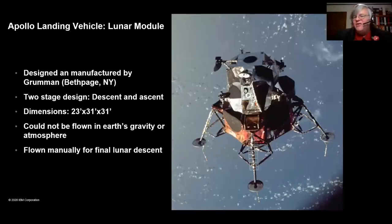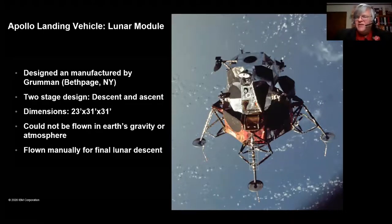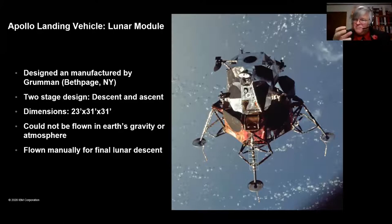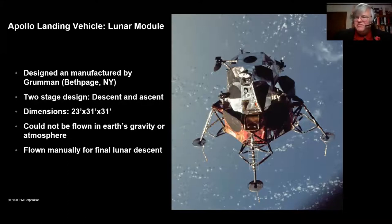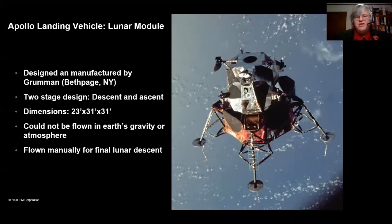We'll talk a little about how IT saved that mission in a few moments. I have to mention the lunar module — I worked for Grumman for a couple of years. When I worked there in the early 80s, every once in a while I'd meet somebody who worked on this program, and they'd speak about it with the reverence they'd reserve for their spouse and grandchildren — this really was the job of a lifetime. Grumman in Bethpage, Long Island built it. It's a two-stage design — the whole thing lands on the Moon, then only the top piece takes off. What amazes me is you couldn't test it, because you can't simulate lunar gravity.